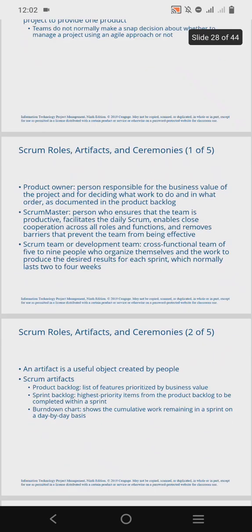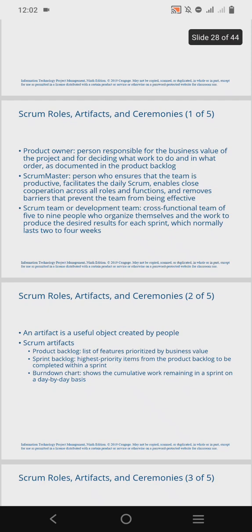An artifact is a useful object created by people, and it consists of the product backlog, the sprint backlog, and the burndown chart. The product backlog is a prioritized list of features to be implemented as part of a project or product development. The sprint backlog consists of the highest priority items from the product backlog to be completed within a sprint.